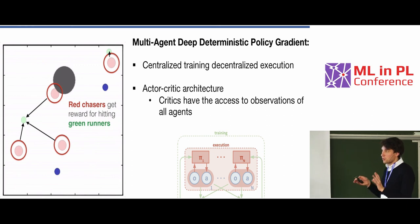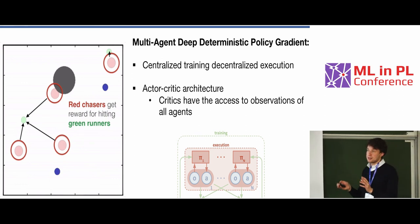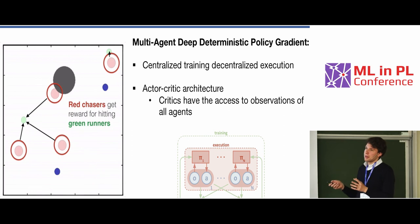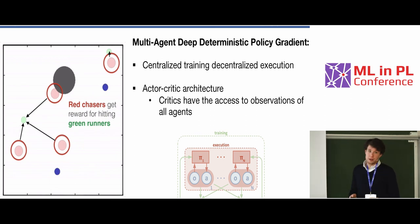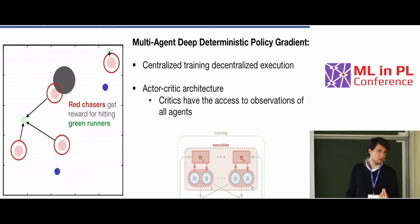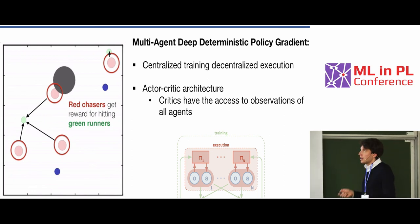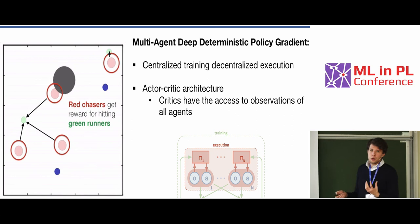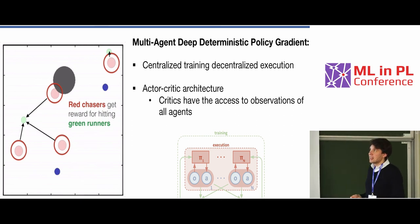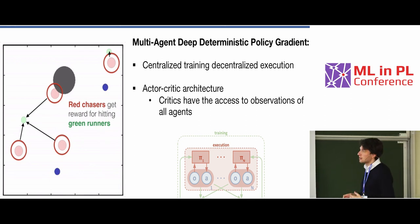A few remarks: I was speaking about cooperation, and these algorithms were mainly tested in cooperation. However, they could also be applied to competition. For example, if you apply LOLA against a naive agent, LOLA is far, far superior, because it knows how to influence the other agent. The same goes for MADDPG — when such a clever agent interacts with, say, a DQN, which is a naive agent, then MADDPG can very easily find a way to manipulate DQN in some way.